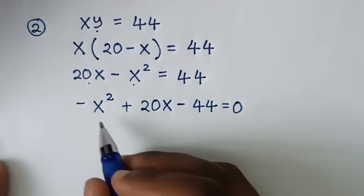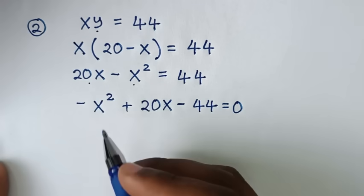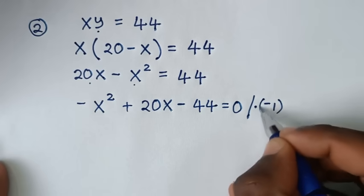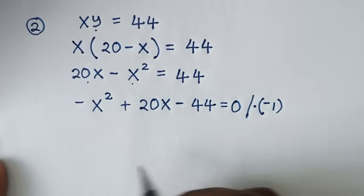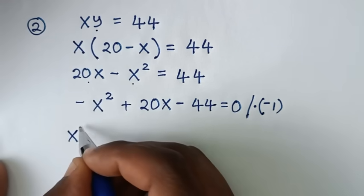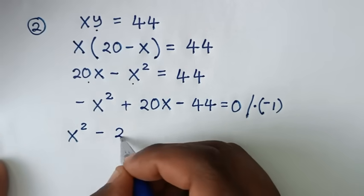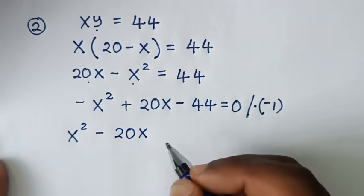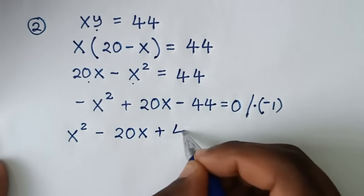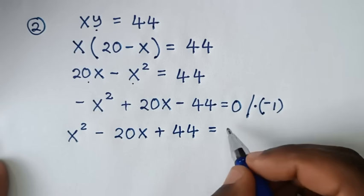To make the x squared term positive, we multiply the entire equation by negative 1. This gives: x squared minus 20x plus 44 equals 0.